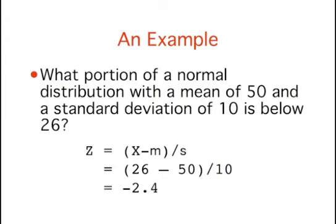As a simple application, what portion of a normal distribution with a mean of 50 and a standard deviation of 10 is below 26? First, we transform the score of 26 to a score on the standard normal distribution, also known as a z-score. The result is negative 2.4.